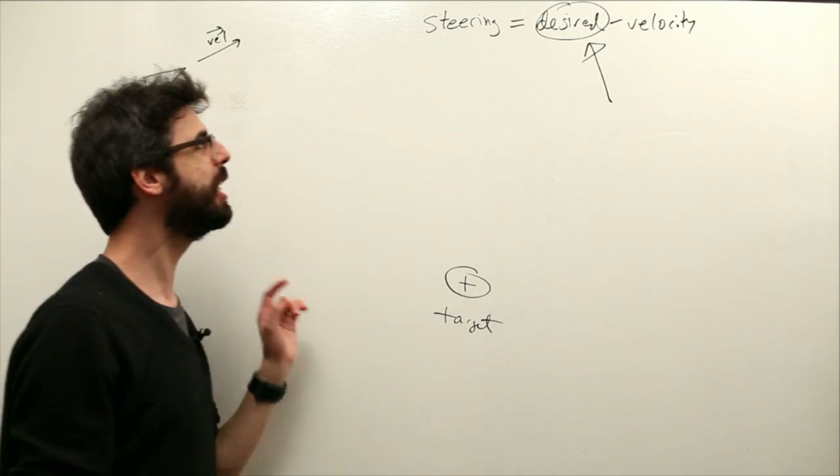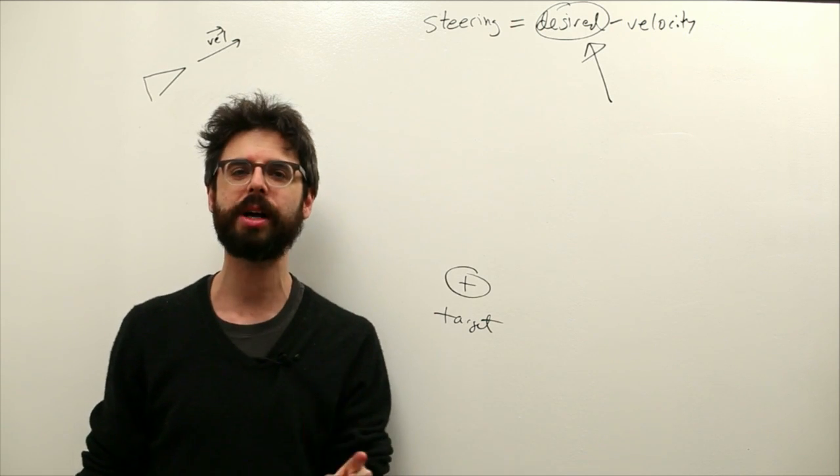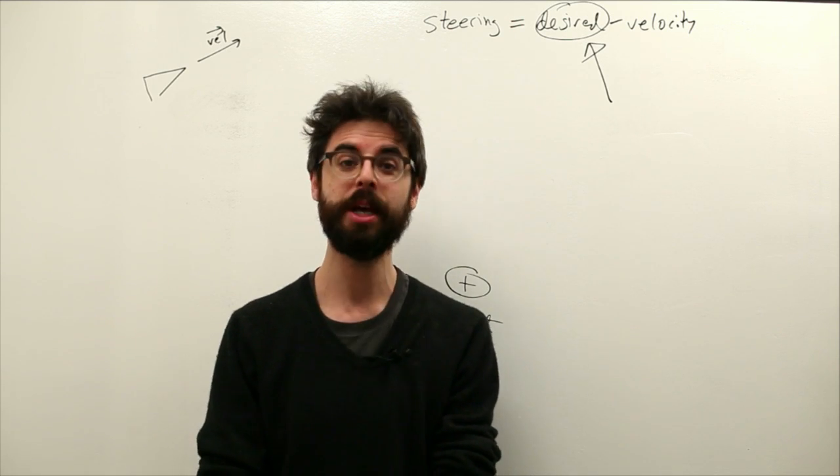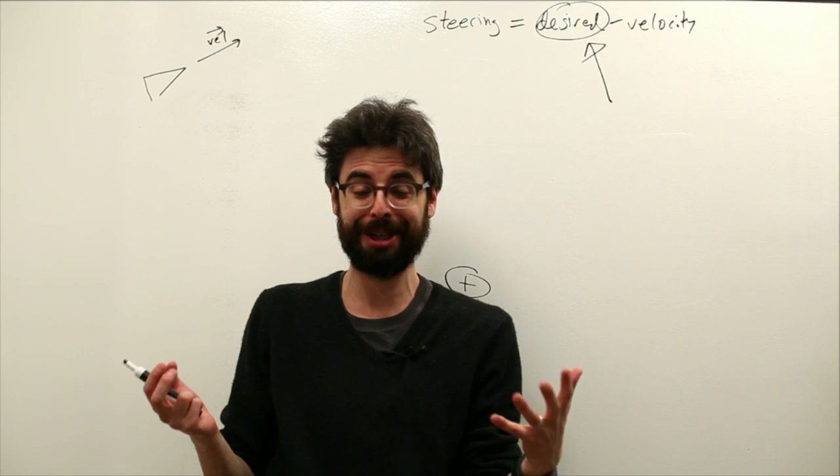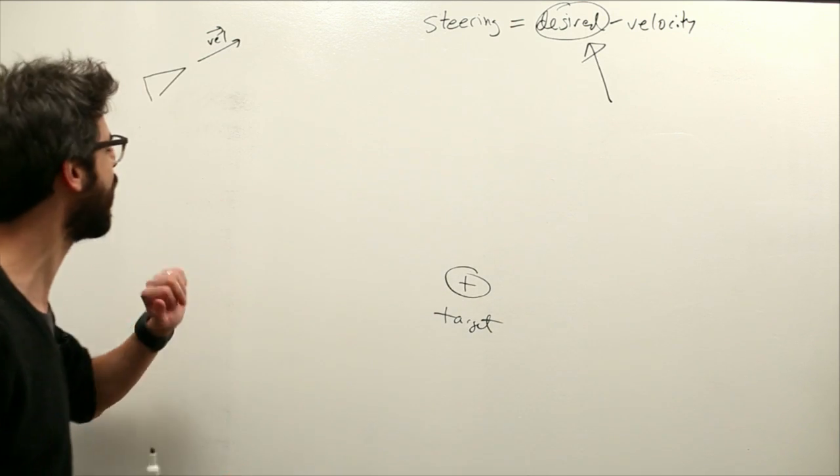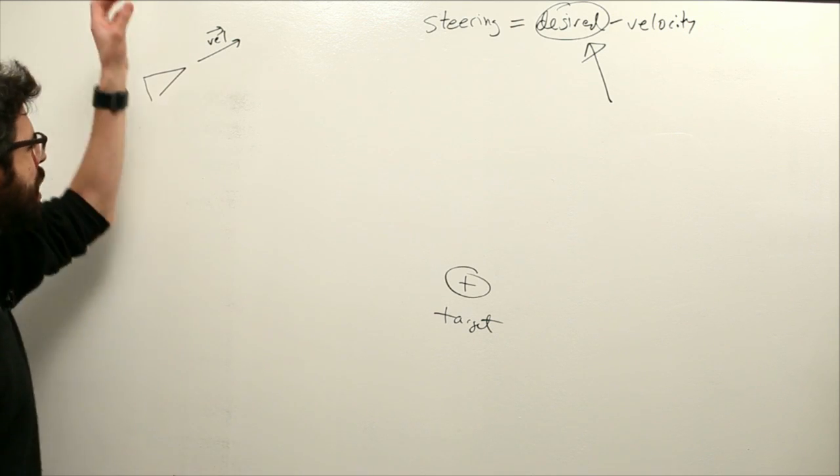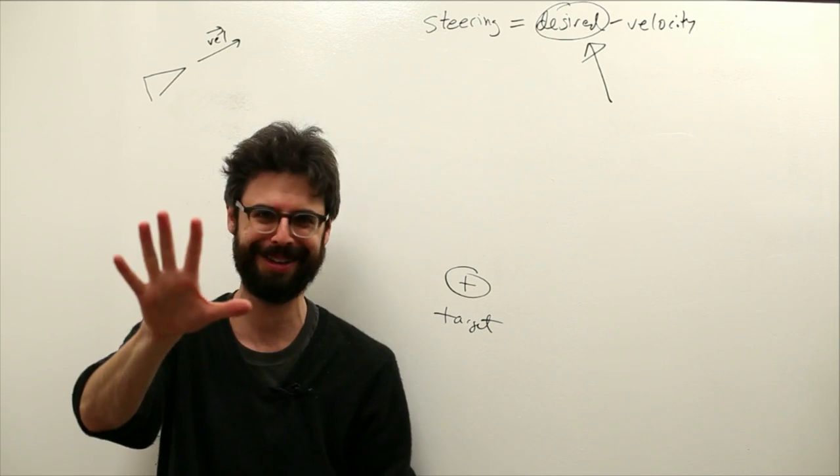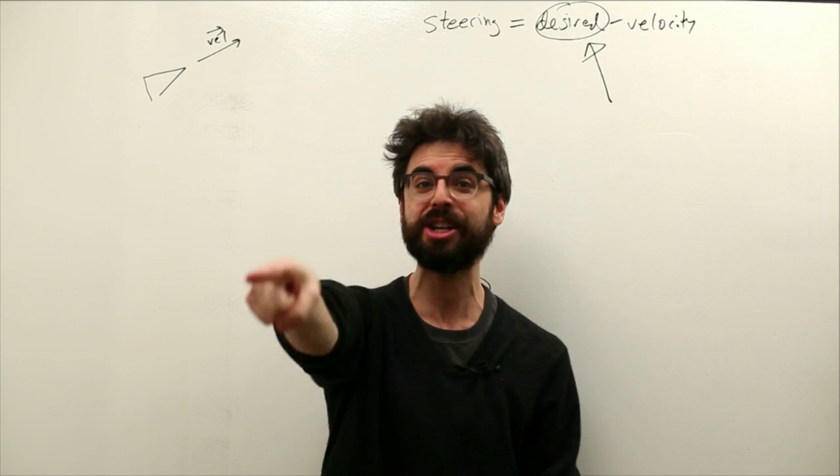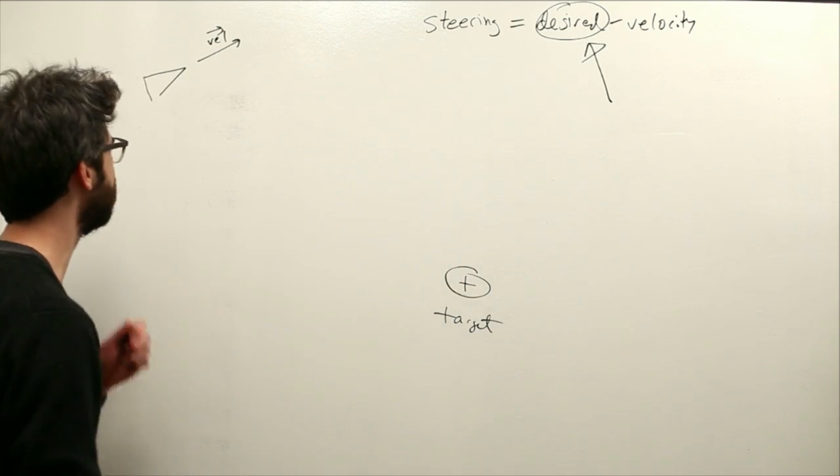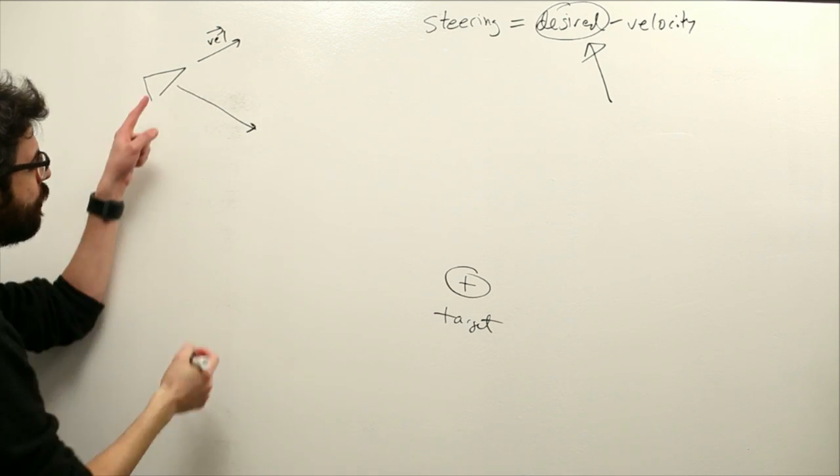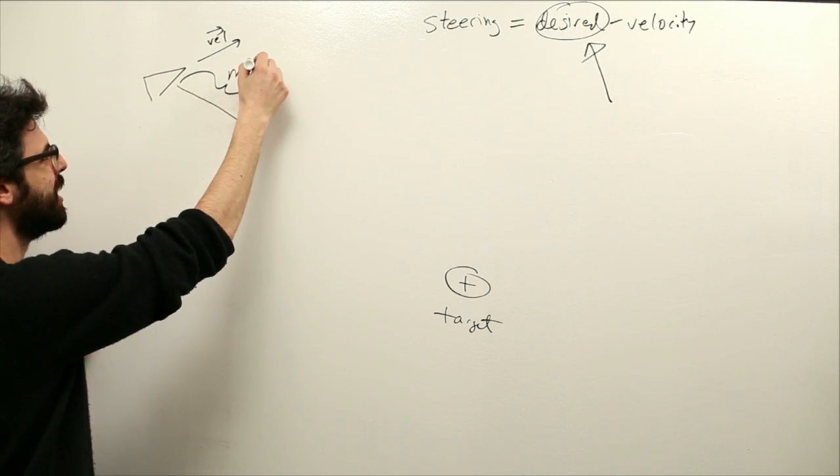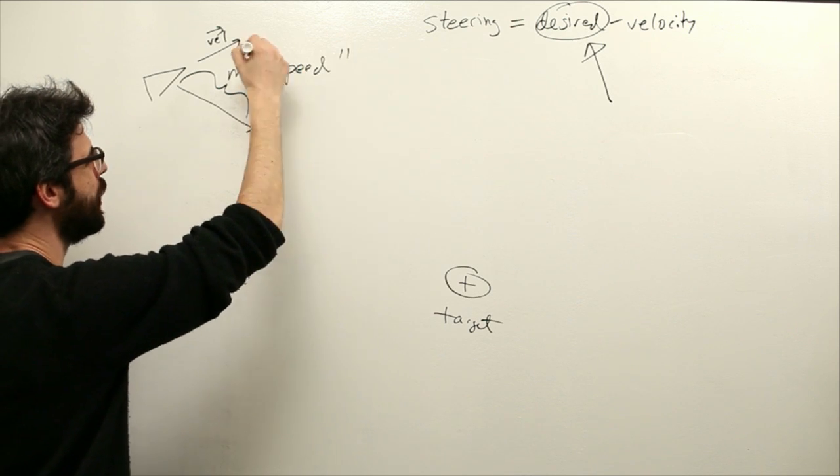Desired, desired, desired velocity. This means when we go to calculate a steering force, we need to determine what is that vehicle's actual desired velocity. And this can actually be quite a complicated thing to figure out. Fortunately for us in this scenario, it's not going to be too hard. I desire to seek that target. What is my desired velocity? I just, the target's over there. I want to move in the target's direction as fast as possible.